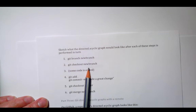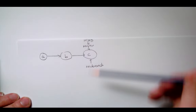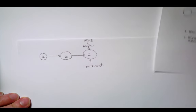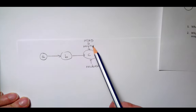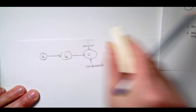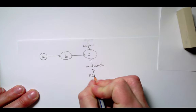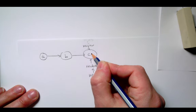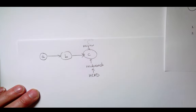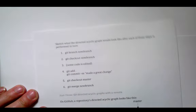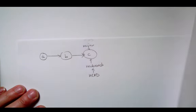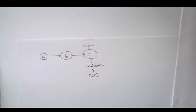Step two: git checkout new_branch. We were on master with this code in our working directory. By checking out new_branch, head moves down here onto new_branch. It's not actually going to change any of the files in our working tree because it's still pointing to the same snapshot, but now head is looking at new_branch. Step three: some code is edited. What does this do to the directed acyclic graph? Editing files does absolutely nothing to git history.